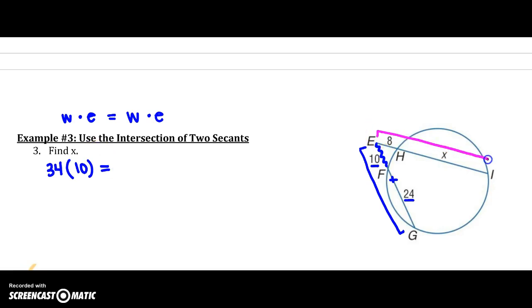That's going to equal my whole, E to I. Well, that actually is 8 plus X, because we did 10 plus 24. So, we're going to do 8 plus X, times my exterior, which would be 8. Alright, so we have 340 over here equals, distribute 64 plus 8X.